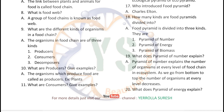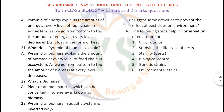What does pyramid of number explain? Pyramid of number explains the number of organisms at every level of the food chain in an ecosystem. As we go from bottom to top, the number of organisms at every level decreases. What does pyramid of energy explain? Pyramid of energy explains the amount of energy at every level of the food chain in an ecosystem. As we go from bottom to top, the amount of energy at every level decreases.